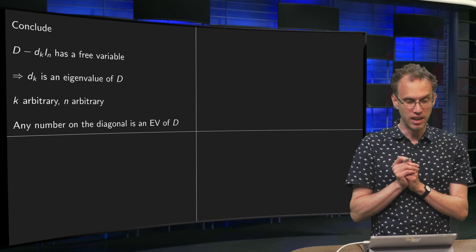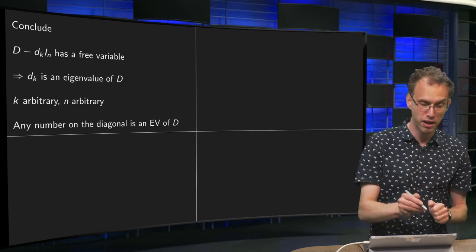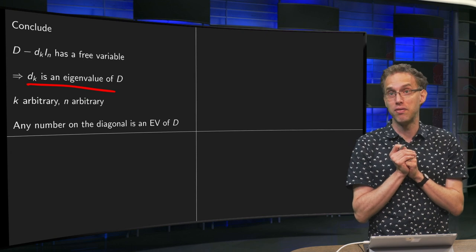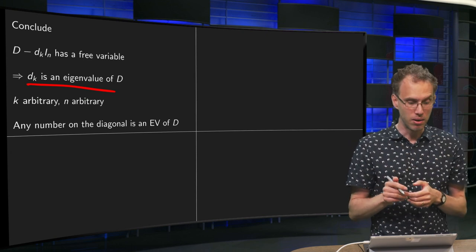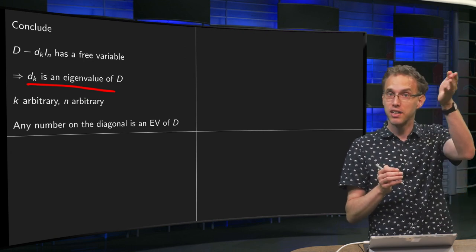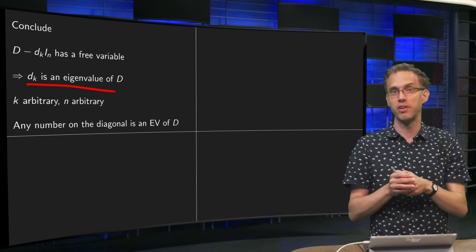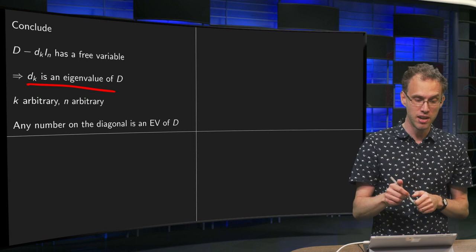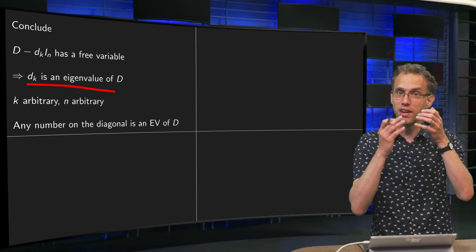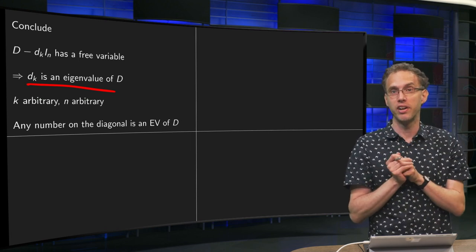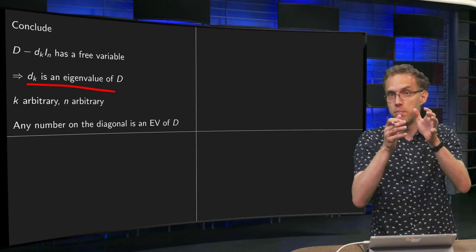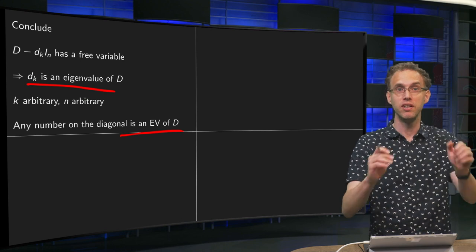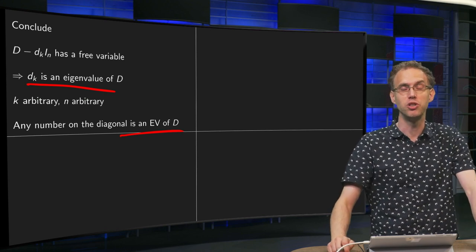Your A minus dₖ times Iₙ will have a free variable. You see D minus dₖ times Iₙ has a free variable, so that means that dₖ is an eigenvalue of D. Now, your k was arbitrary, so you could pick any number on the diagonal. The size of your matrix was also arbitrary. That means you have shown for any number on the diagonal of a matrix D that this is automatically an eigenvalue of D, which is what you needed to show. Next task is 05. Let's draw again.